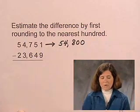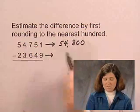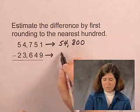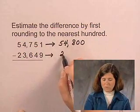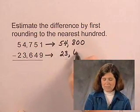And we're to round 23,649 to the nearest 100. Doing that, we have 23,600.